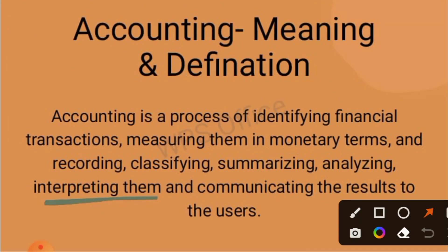Accounting Meaning and Definition. The detailed definition of accounting is: Accounting is a process of identifying financial transactions, measuring them in monetary terms, and recording, classifying, summarizing, analyzing, interpreting them, and communicating the result to the users.